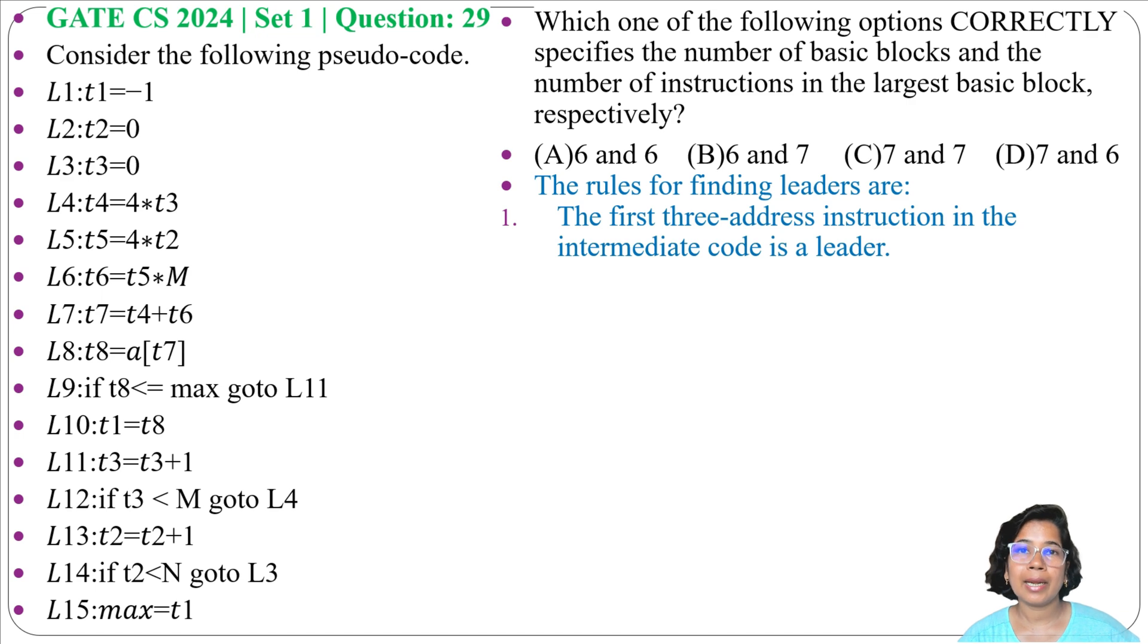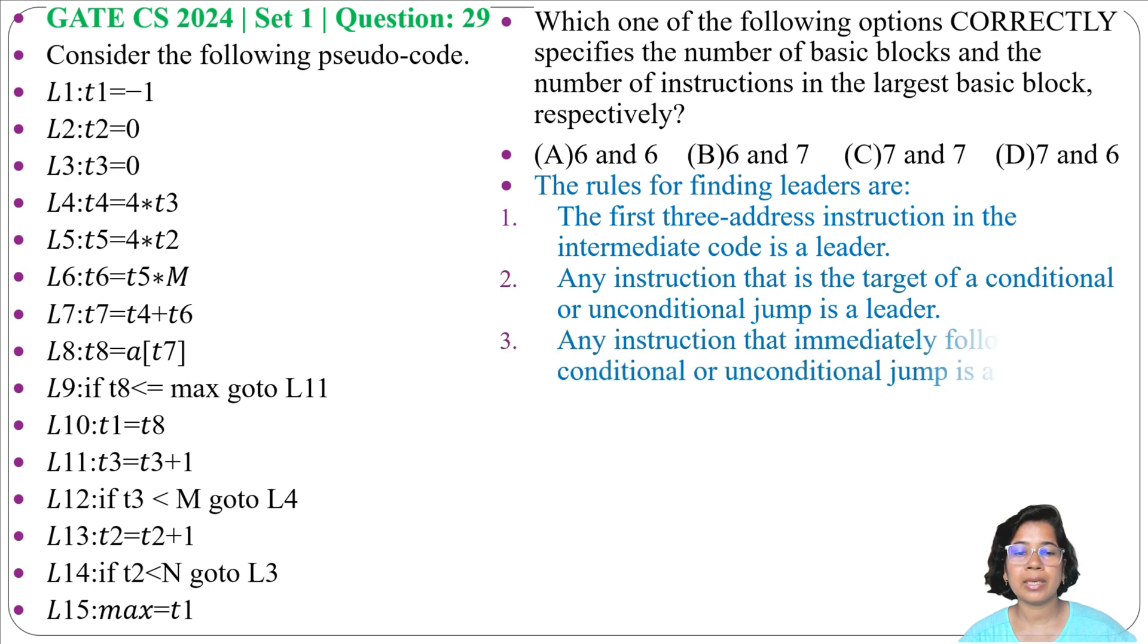Second point is the conditional and unconditional jump target is a leader. Then, the next statement of conditional and unconditional jump is a leader. So these are the three points by which we can identify the leader.